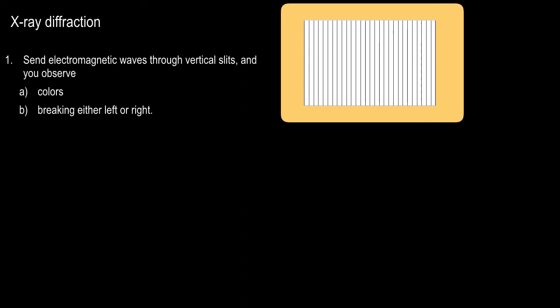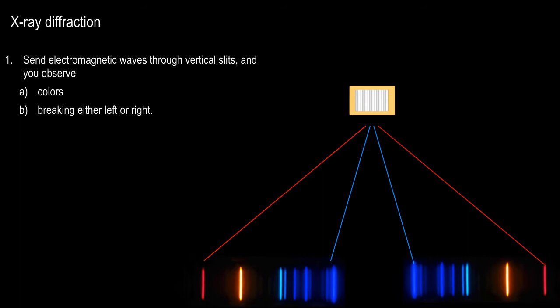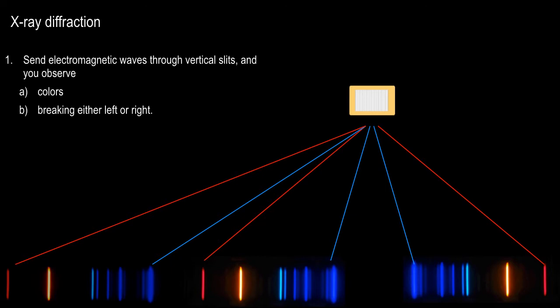Let's do a mini review on diffraction. If you send electromagnetic waves through vertical slits — this idealized diffraction grating — it's going to disperse the light into colors, just like sunlight is dispersed by a prism. If you send light produced by a pure helium source, you get spectral lines — some to the left, some to the right, depending on how you look through the diffraction grating and how good your optics are.